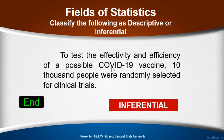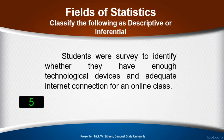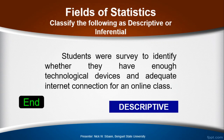Another one: students were surveyed to identify whether they have enough technological devices and adequate internet connection for an online class. Is this descriptive or inferential? The answer is descriptive. It doesn't involve identifying a sample or a smaller group — this is purely descriptive.